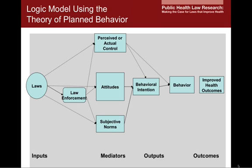Here's an example of a logic model on how law influences behavior, drawing from the theory of planned behavior. Working from right to left, the theory states that change in behavior comes as a result of an increase in the intention to perform the behavior. The intention to perform the behavior is influenced by the individual's perceived or actual control over the behavior, the individual's attitudes towards the behavior, and social norms. In public health law research, we're hypothesizing that laws directly and indirectly — through enforcement — influence these three constructs. In terms of the logic model, we see the laws as the inputs, the constructs as the mediators, behavioral intention as the output, change in behavior as an output or short-term outcome, and improvement in health outcomes as the long-term outcome.